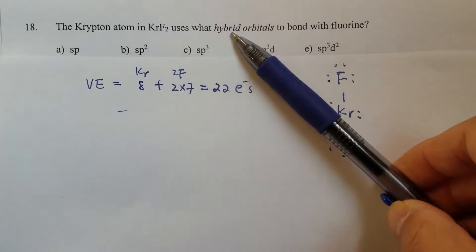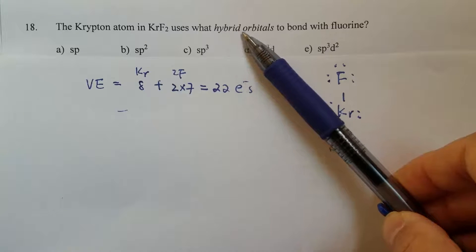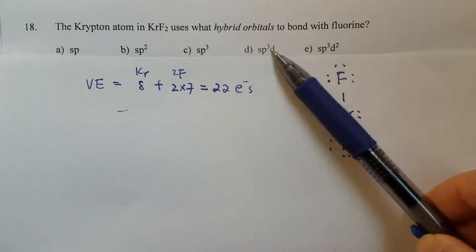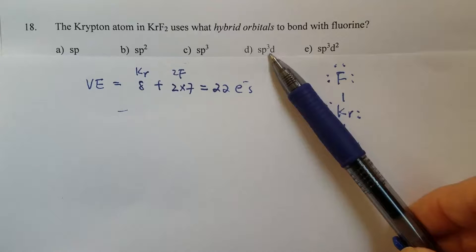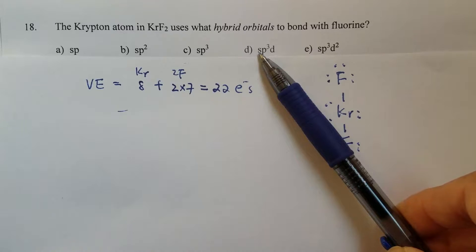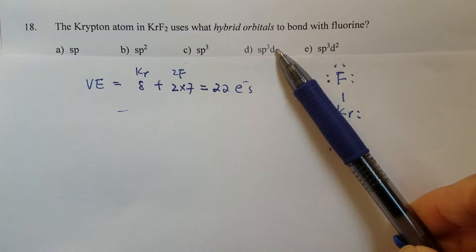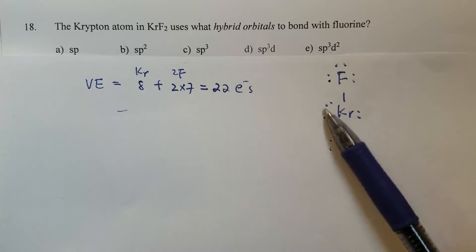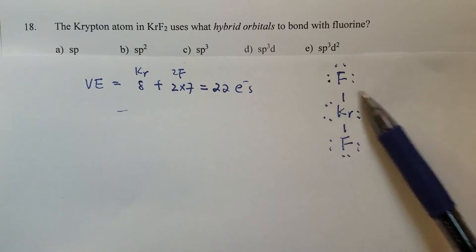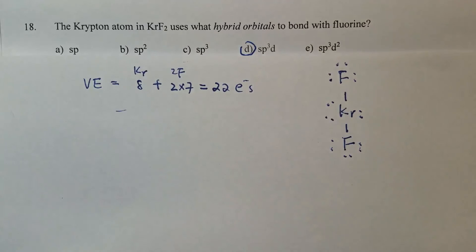Therefore, a total of five electron groups requires five hybrid orbitals. Among the choices, sp³d meets that condition, as it can provide five orbitals. We have one S, that's 1; three P orbitals, that's 4; and one D, that's 5. So sp³d can provide a total of five orbitals for the five electron groups on the central atom. Therefore, sp³d is the correct answer.